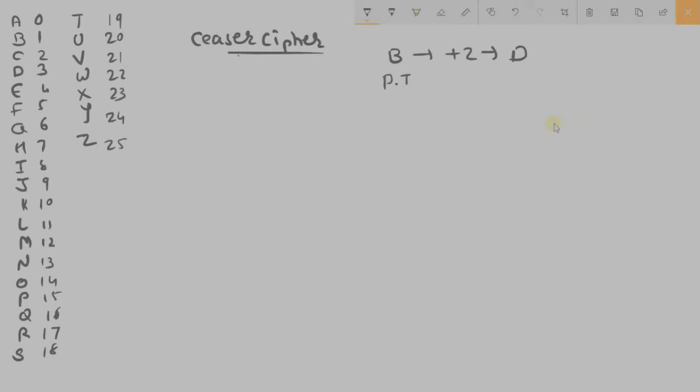So this was your plaintext, this is your key, and this is your ciphertext. So B is here, you can see at left hand side 1. So my key is 2, so I have added it with 2. I have got 3, so what is 3? 3 is D. So I have got D as a ciphertext.